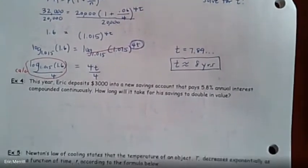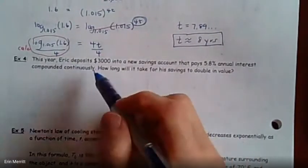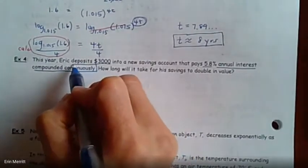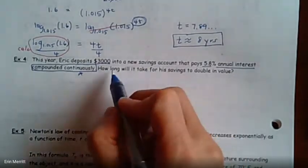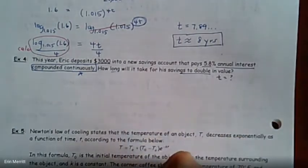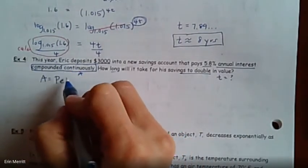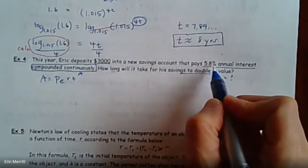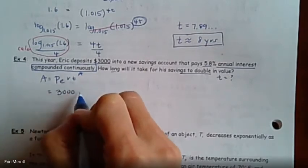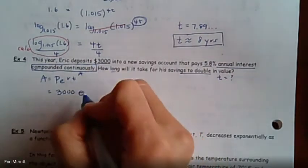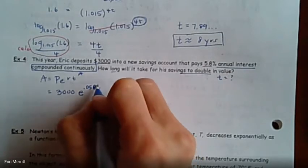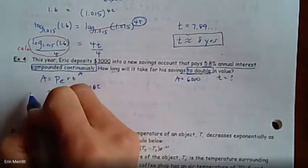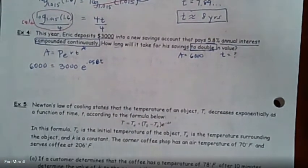The next question. Eric's depositing 3,000 into a new savings account. It pays 5.8% annual interest compounded continuously. Ding, ding, ding. That should tell you something right there. How long is it going to take for the savings to double? So we're looking for t, but compound continuously means Pe^rt formula. 3,000 is our P value. 5.8% is our R value. So if we plug 3,000 in, e is a value itself, don't plug in for e. Raised to the 0.058, we don't know what t is. I want the money to double, so my A value is double 3,000 or 6,000.